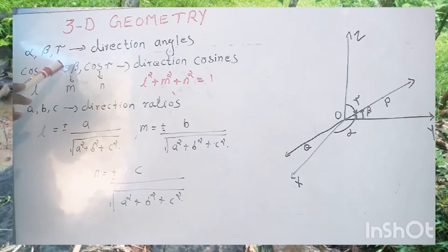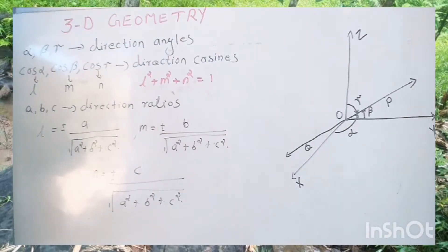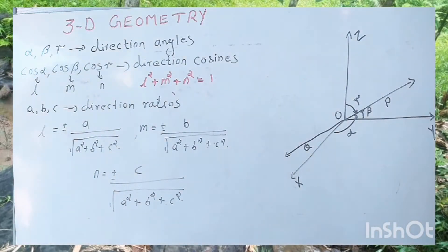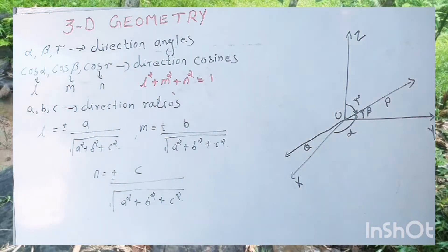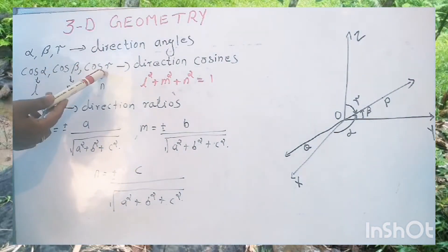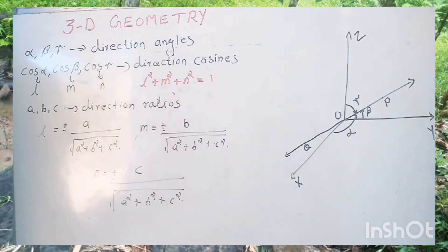Cos alpha, cos beta, cos gamma are called direction cosines. Alpha, beta, gamma are the angles with the positive X axis, positive Y axis, and positive Z axis. Then alpha, beta, gamma are called direction angles and cos alpha, cos beta, cos gamma are called direction cosines.